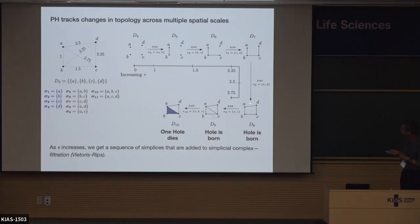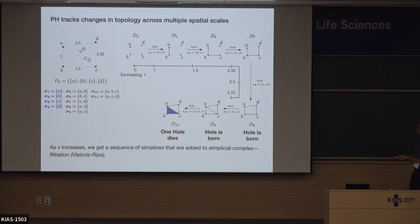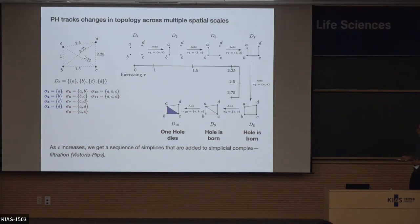Another hole is born because neither A-D-C nor A-D-C can be squeezed to nothing. However, when we add the two-simplex A-B-C, now this can be squeezed to nothing and one of the holes dies — the hole A-C-B dies. The triangle A-D-C is not in the simplicial complex: there are edges around it, but the interior is not included. I can only squeeze things which are filled in, which are part of the simplicial complex. Since the interior of triangle A-C-D is not in the simplicial complex, I can't squeeze it to nothing. This is how we compute the birth-death diagram.